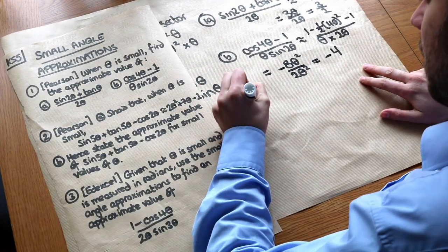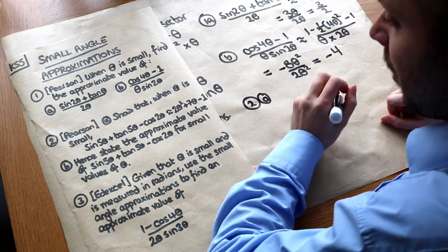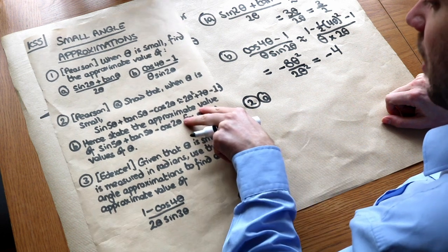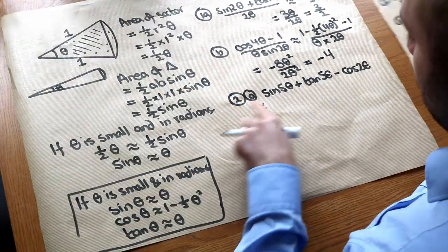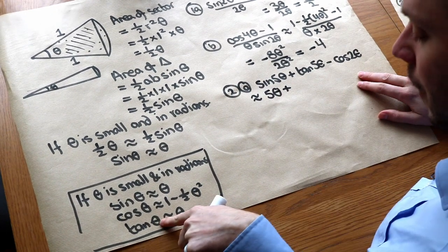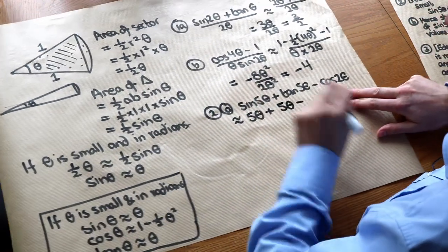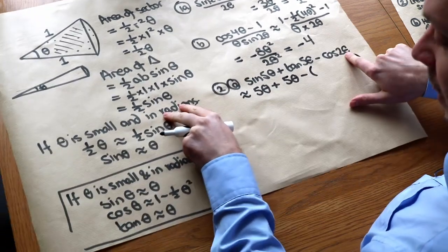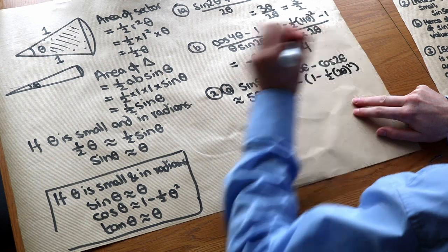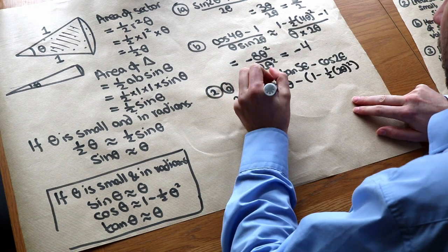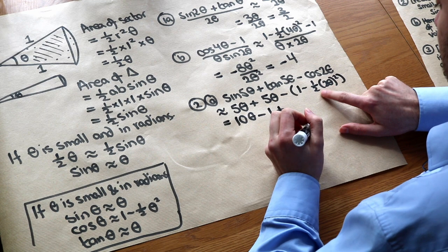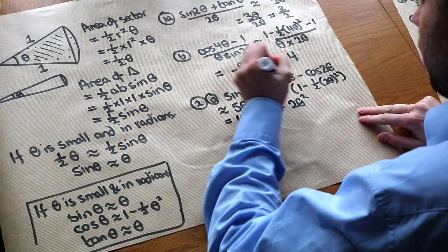Next question — also from the textbook, then we'll do an exam question. Show that when theta is small and in radians, sin5θ + tan5θ − cos2θ ≈ 2θ² + 7θ − 1. Writing this out: sin5θ ≈ 5θ, tan5θ ≈ 5θ, and cos2θ ≈ 1 − ½(2θ)². Being careful with brackets, we get 5θ + 5θ − (1 − ½ · 4θ²). That's 10θ − 1 + 2θ², and noting the correction, the theta terms combine to give 7θ.